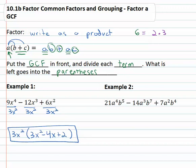We are undistributing the greatest common factor. Let's look at example 2. In example 2 we've got 21, 14 and 7. Those are each divisible by 7. They also share a in common. We'll take the lowest exponent, a squared.